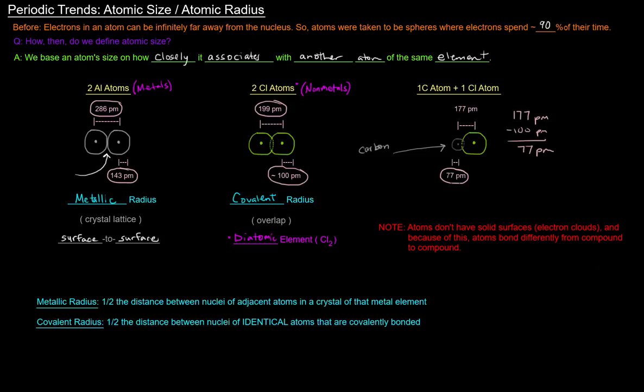So the length of the distance, or the distance between the two nuclei is not always going to be the same. So the atomic size or radius depends on the substance in question, which is kind of weird.